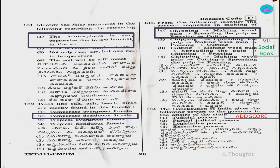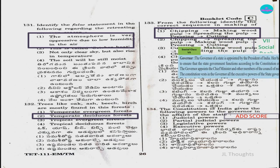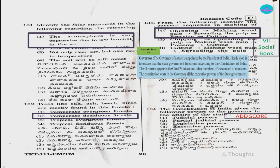Question number 134: The Constitution of India gives the following powers to the governor in the affairs of the state — option 1: judicial powers; option 2: partial judicial powers; option 3: legislative powers; option 4: executive powers. An ADD score was given for this question. The answer is given in social class 7 under the topic of Governor.